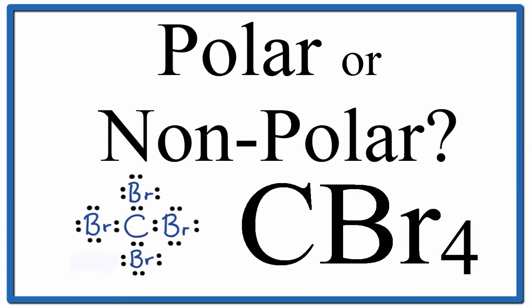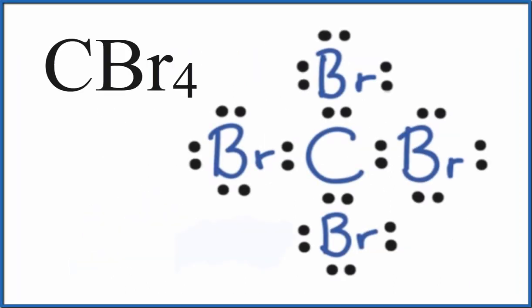To determine if CBr4 is polar or nonpolar, we'll look at the Lewis structure. This tells us the distribution of valence electrons around the molecule, and it helps us determine the shape and the polarity.